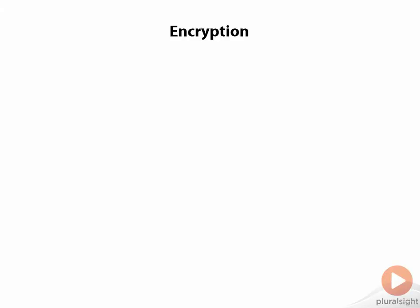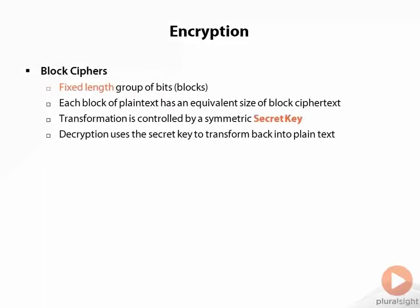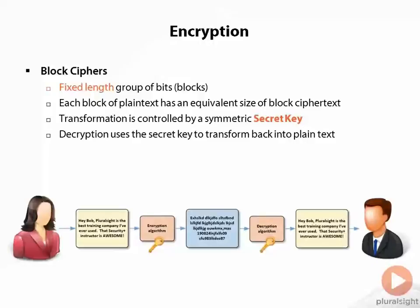One of the tools in our toolbox is encryption — that's really our best defense for data in transit and also data at rest, as far as interception is concerned. The two things we need to be aware of are block ciphers and stream ciphers. Block ciphers use a fixed-length group of bits, where each block of plaintext has an equivalent size block of ciphertext.